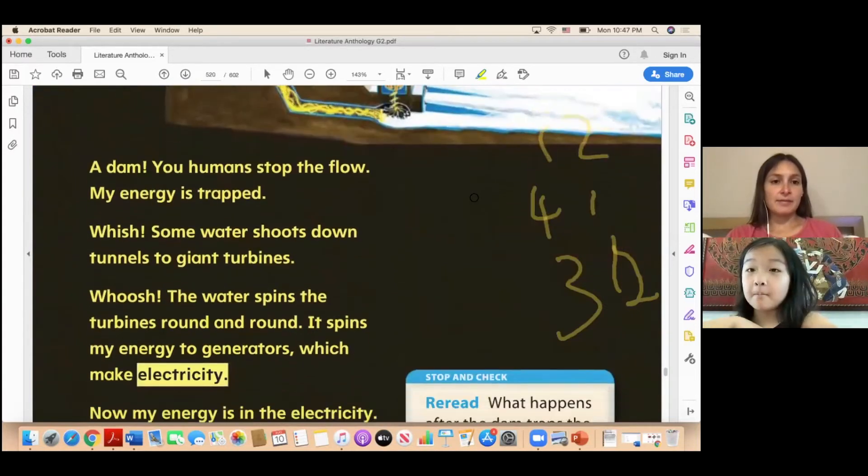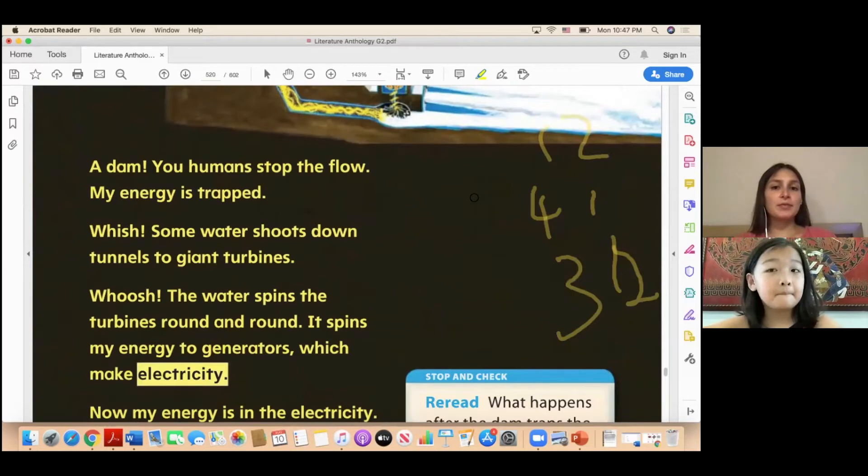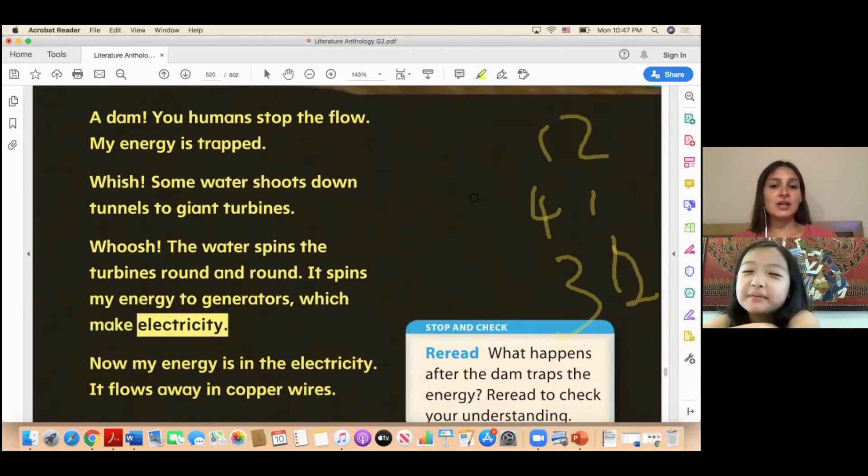All right, so: A dam! You humans stop the flow. My energy is trapped. Wish! Some water shoots down tunnels to giant turbines. Whoosh! The water spins the turbines around and around. It spins my energy to generators, which make electricity. Now my energy is in the electricity. It flows away in copper wires.